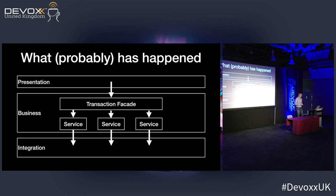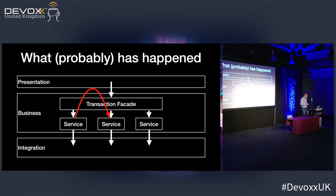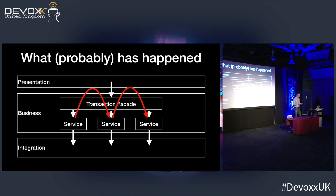In summary, what probably happened: the program started with a normal three-tier architecture. The goal was to create a transaction facade in front of the business services. Along the way, business services started calling each other through the transaction facade, and the programmers tried to correct it. The result is what you've seen. I don't know why they didn't choose a framework to do this for them, but it happened and caused massive issues — that code never worked properly.